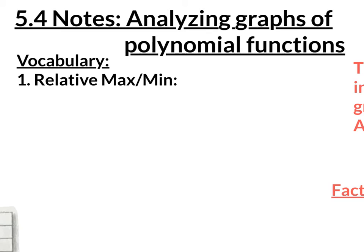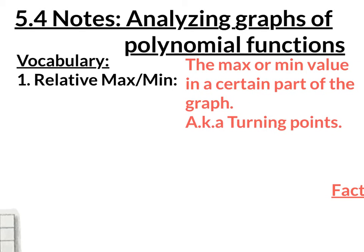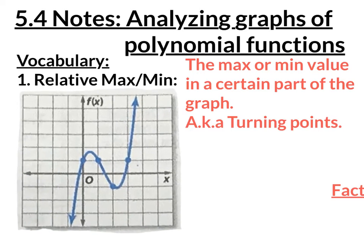We were already analyzing graphs — we're going to analyze some more. Write down the title, and we're going to start with this new vocab term. This new vocab term is called relative maximum and relative minimum. Not absolute maximum or absolute minimum, but relative maximum and relative minimum. Copy it down — it's the max or min value in a certain part of the graph. Also known as turning points.